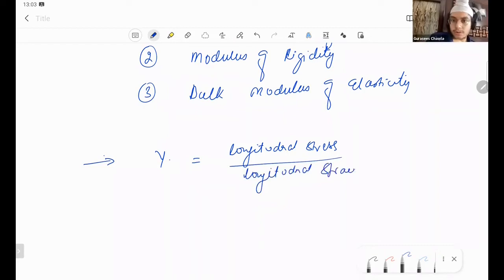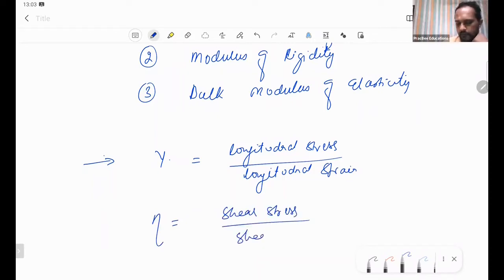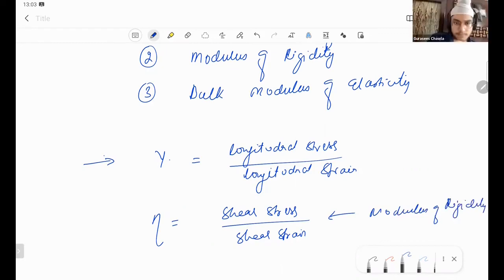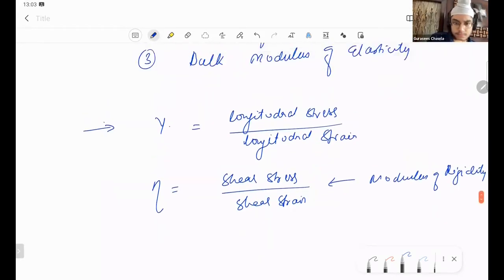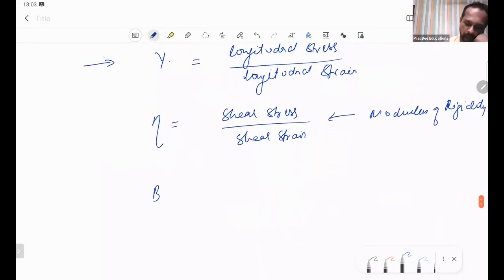Modulus of Rigidity, that is shear stress upon shear strain. We represent the Modulus of Rigidity as eta, and then we have Bulk Modulus B.